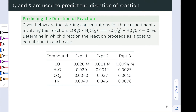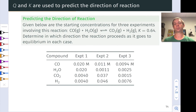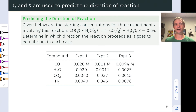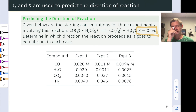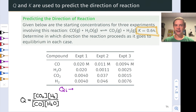In this practice problem, we're given three experiments — three reaction mixtures involving the same reaction: CO + H₂O forming CO₂ + H₂, with K = 0.64. We want to determine the direction of spontaneous reaction for each mixture. The key idea is that Q will tend spontaneously toward K. So we write an expression for Q as products over reactants — the stoichiometry is 1:1:1:1, making this straightforward — then plug in the initial concentrations to calculate Q for each experiment.